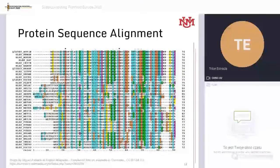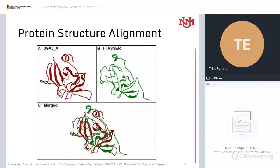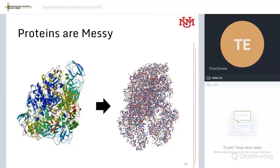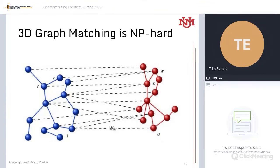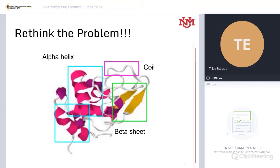However, the sequence is fixed and does not consider the tertiary structure of proteins, so it cannot be used for analyzing conformational changes. Another method could be protein structure alignment, but proteins are messy — they look like a cloud of atoms and range in size from several hundreds to several thousands of atoms. Doing structure alignment is not easy; it is basically a generalization of 3D graph matching or even partial graph matching, both of which are NP-hard problems. So this is not an efficient way of dealing with this problem, especially not for in-situ analysis.